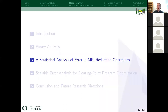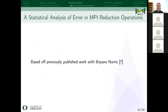Now the rest of this talk will be about floating point. The first part is titled 'A Statistical Analysis of Error in MPI Reduction Operations' — I'll explain all the words. This is work previously published at the Correctness workshop.